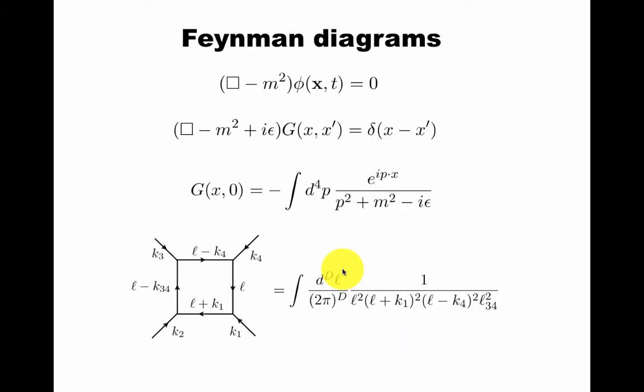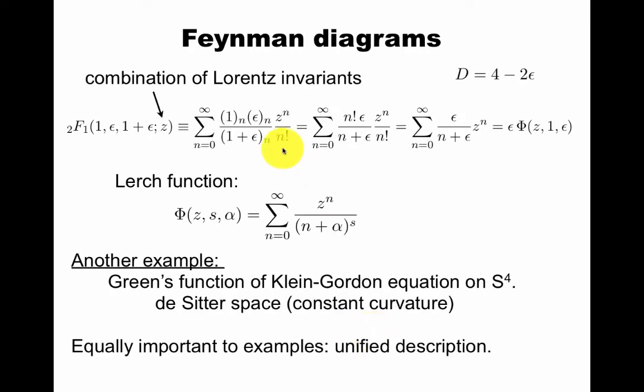Hypergeometric functions also appear in Feynman diagrams. This is the Klein-Gordon equation, this is the Green's function, this is the propagator. And if you compute a loop diagram, and we do this, you find this, which can be expressed in this Lerch function that is the generalization of both the polylogarithm and the Riemann zeta function. An example of something similar: the Green's function of the Klein-Gordon equation on the four-sphere describes de Sitter space, our universe.